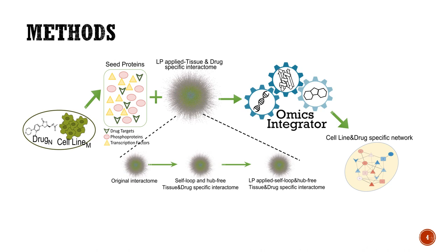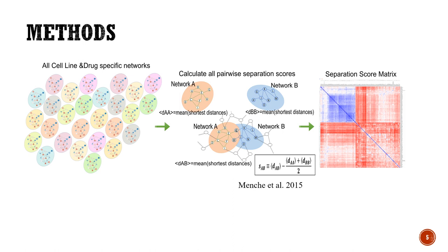This figure summarizes the protocol for a single network modeling. We need two input files, which are seed protein lists and the interactome. Seed proteins include drug targets, significantly phosphorylated proteins, and transcription factors that regulate the significantly transcribed genes. The interactome is processed to exclude hub proteins and flow of expressed genes. Then the Adamic-Adar link prediction method is applied to enrich the interactome with possible false negative interactions. For network reconstruction, Omics Integrator software is used. It applies the prize-collecting Steiner Forest formalism and balances the trade-off between costs of edges and prices of nodes.